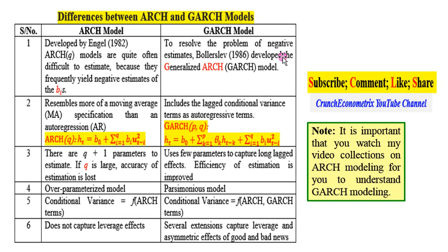Now let's look at some differences between ARCH and GARCH models. The ARCH model as developed by Engle in 1982 can be generalized to an ARCH model, which can often be difficult to estimate because it frequently yields negative estimates of the betas. Bollerslev in 1986 was able to resolve the problem of negative estimates by developing what is now known as the generalized ARCH model.